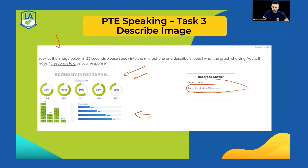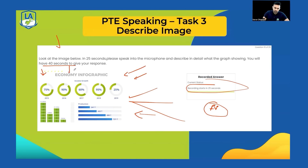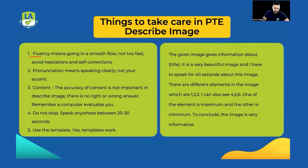Content in Describe Image is very important. If this image is given to a thousand different students, no two students will have the same answer, and there is no human checking in PTE. Therefore, there is no fixed answer. You might explain it one way, I might explain it differently — you might say something will increase, I might say it will decrease. So there is no right or wrong answer. Accuracy of content is not important — what matters is keywords. You just need around five to six keywords from the image to cover your content.